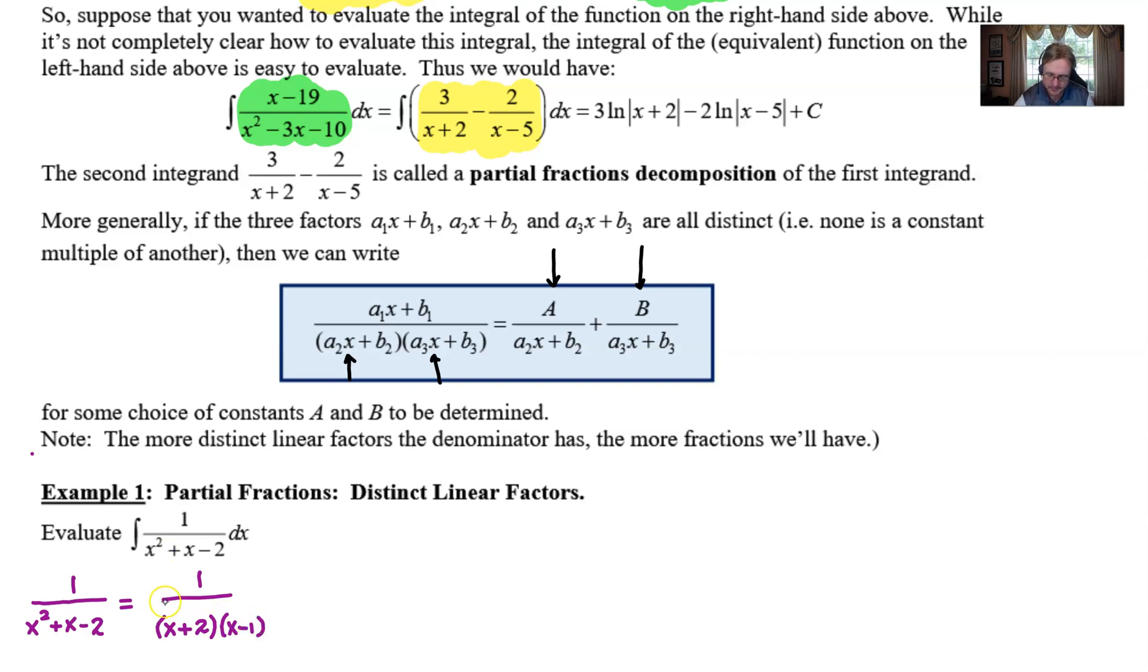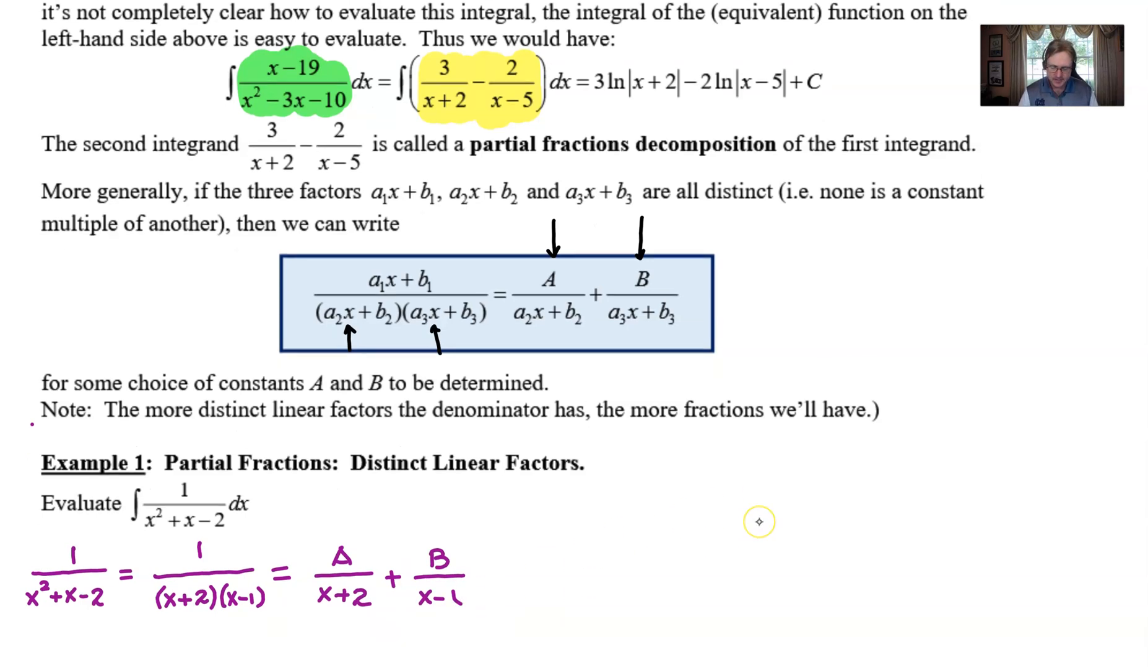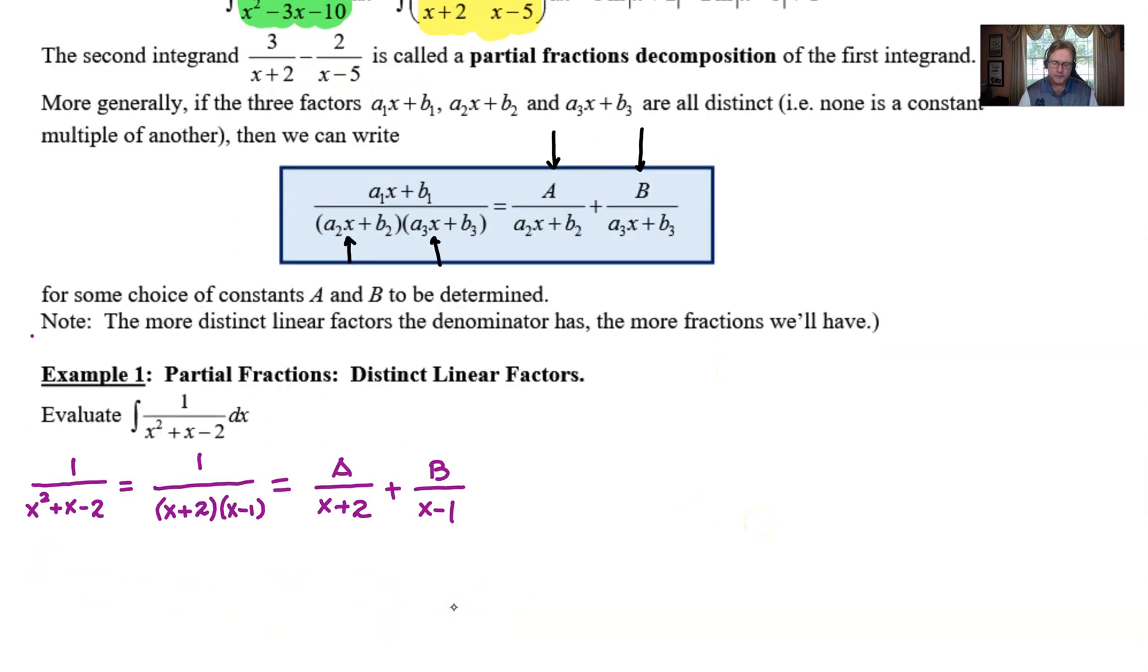There's going to be your factoring: (x+2)(x-1). Then we're going to break this apart. According to our model, we know that this would be equivalent to some constant A over one of the two factors—it doesn't matter which one you put first—plus some constant B over our other denominator factor (x-1).